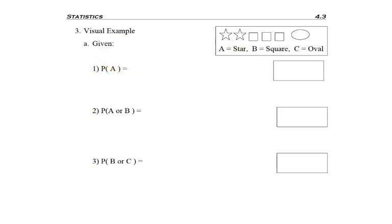In problem 3A1, I'm asked to find P of A, which just means the probability of A. According to the legend, A means I'm working with a star. I'm looking for the probability of selecting a star from the shapes above. Two of the six shapes are stars, so I have 0.3333, or specifically a 33.3% chance of randomly picking one shape and it's a star.